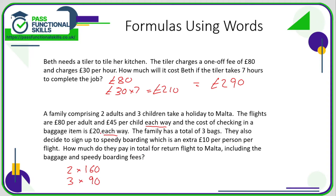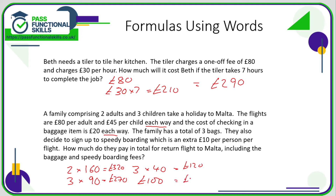It's £20 each way for baggage, so that's going to be £40 return. They've got three bags, so that's three times £40. And they're doing the speedy boarding which is £10 per flight, so five times £10, but there's two flights so that's going to be 10 times £10, which is quite handy — that's £100 for the speedy boarding. So two times £160 is £320, three times £90 is £270, three times £40 is £120, and we've also got the £100.